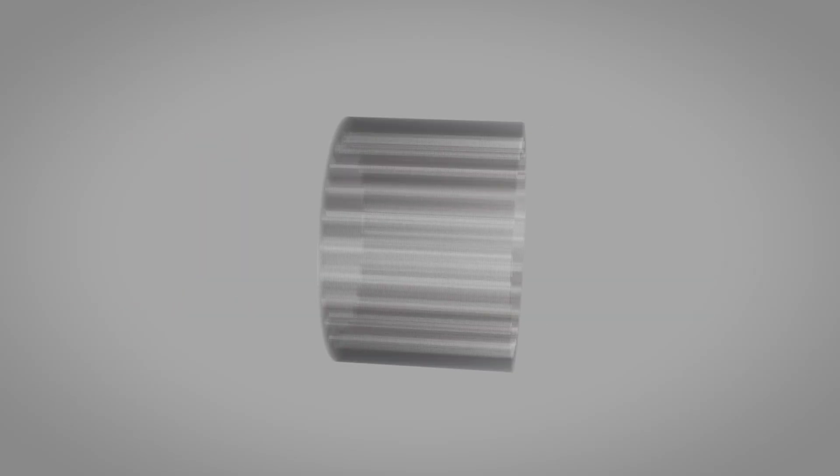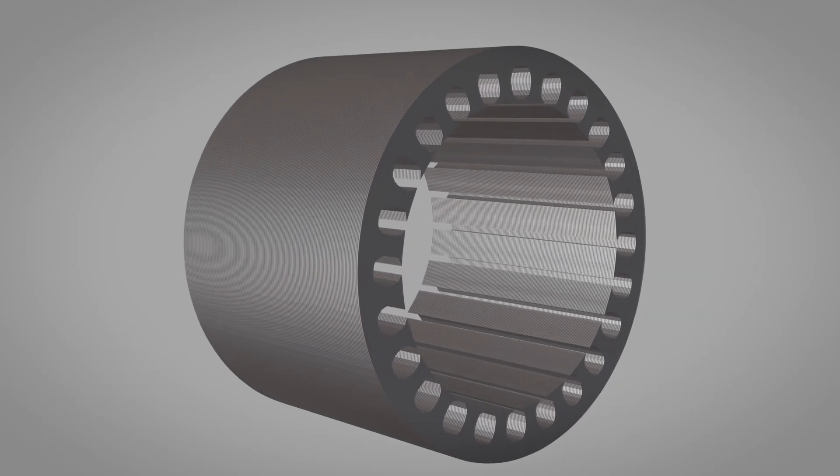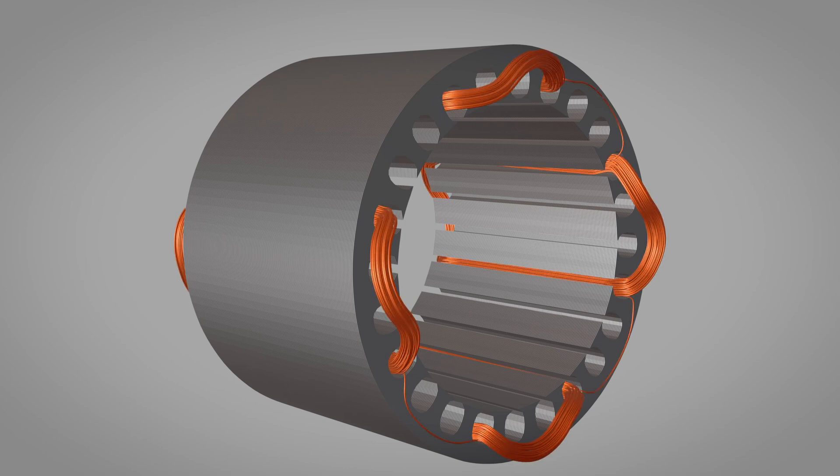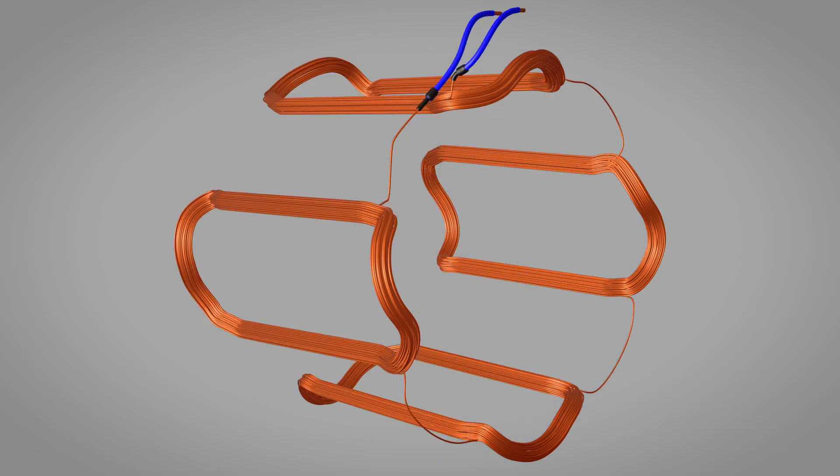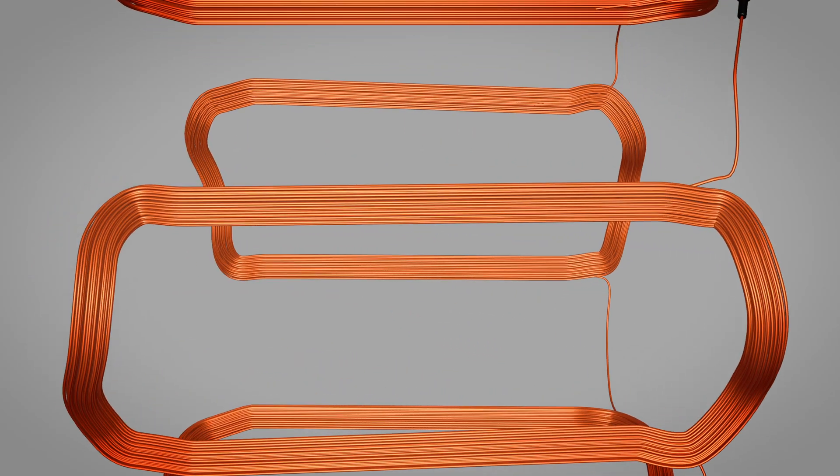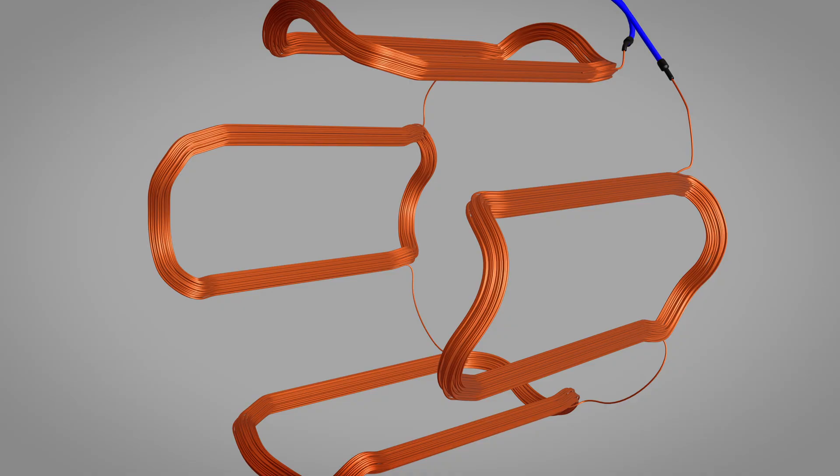Let's begin building our alternator with the stator, the stationary outer structure. Inside the stator, we'll place a single-phase coil made of copper wire wound through slots in the iron core. This coil has two terminals where we'll collect our generated electricity. The coil consists of multiple turns of insulated copper wire, and as magnetic fields cut through these conductors, they'll generate the voltage.